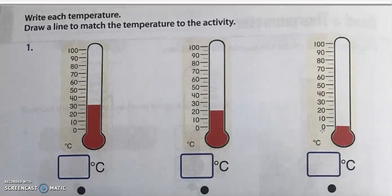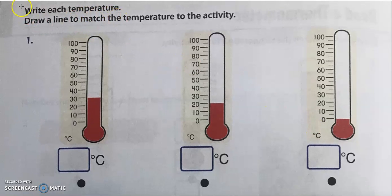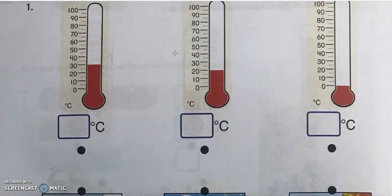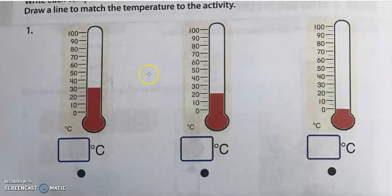Moving on to the next page, you'll have to write each temperature and then you'll draw a line to match the temperature to the activity. It's degrees Celsius now, it's easier for us. So number one, what degree is it right now? It's right about 30 degrees Celsius, go ahead and write it down. 30. And this is 20 degrees Celsius. Right here, the third thermometer is showing us zero degrees, so it's quite cold here.